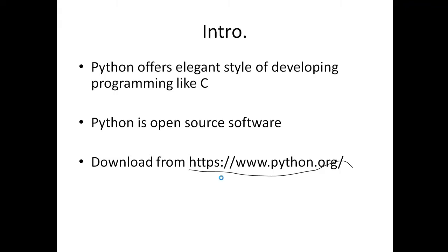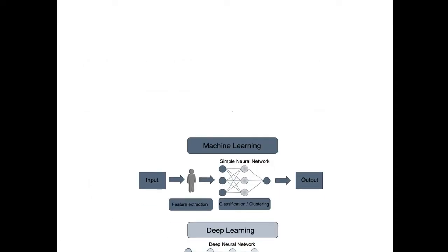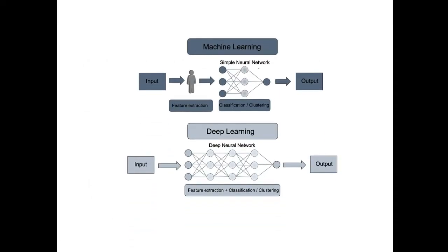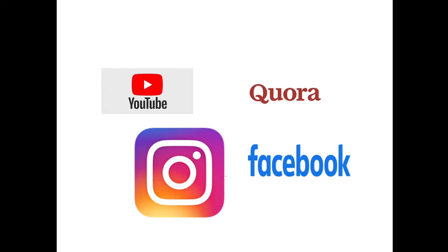If we look at the growth of Python over the past few years, it is a very fast-growing language used in many areas. The reason behind that is machine learning, deep learning, and data analysis — Python is used heavily in these areas. Companies using Python include YouTube, Facebook, and Reddit, which is completely written in Python.